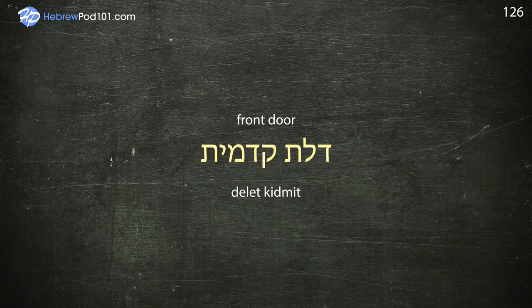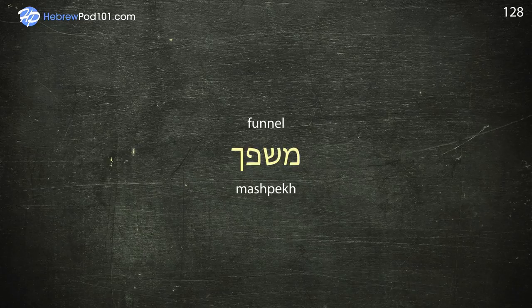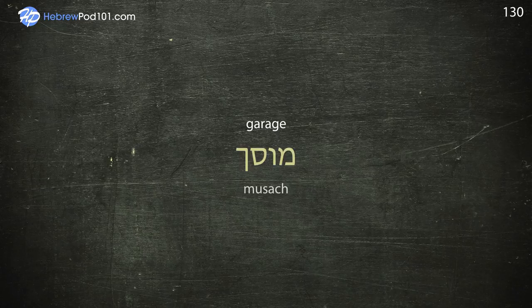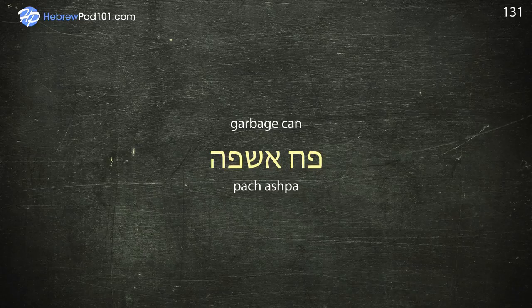Frying Pan — Makhvat. Funnel — Meshpech. Furniture — Rihut. Garage — Moussah. Garbage can — Pach Ashpa. Garden — Gina.